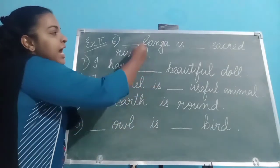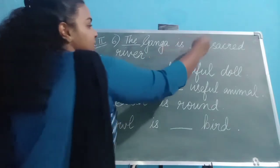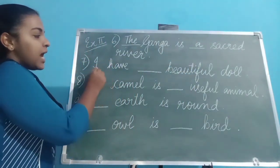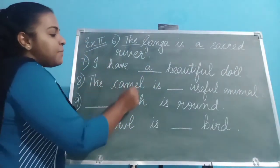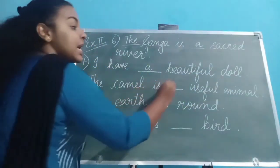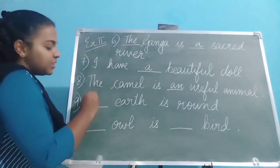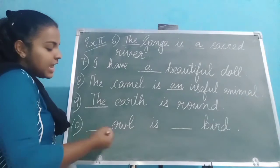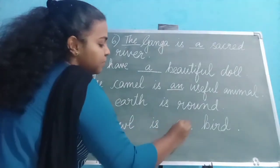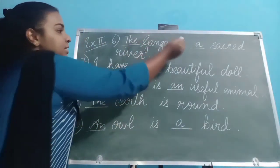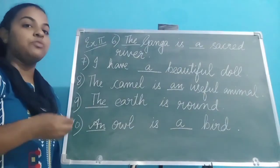So answers: Dash Ganga is dash sacred river — Ganga is a name of a river, so: The Ganga is a sacred river. I have dash beautiful doll — I have a beautiful doll. The camel is dash useful animal — The camel is a useful animal. Dash earth is round — The earth is round. Dash owl is dash bird — owl starts with a vowel, so: An owl is a bird. So our answers are: the, a, a, the, and an, a. These are the answers of exercise 2 part A.